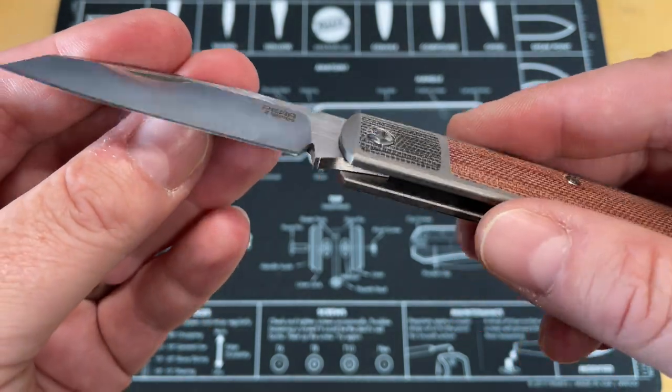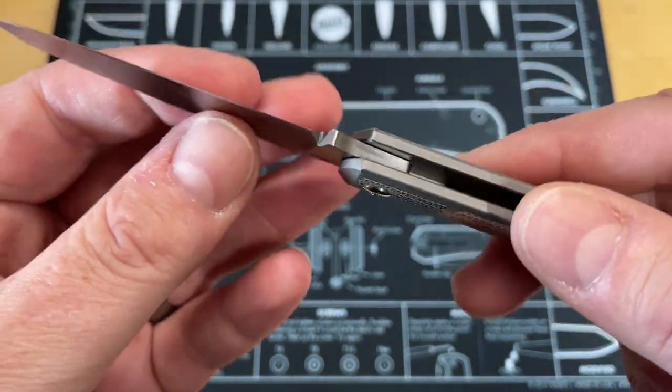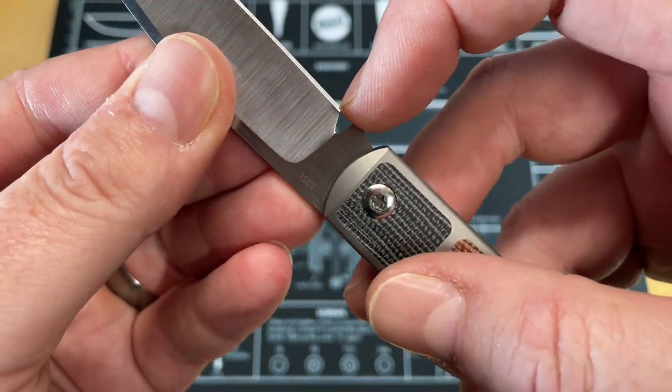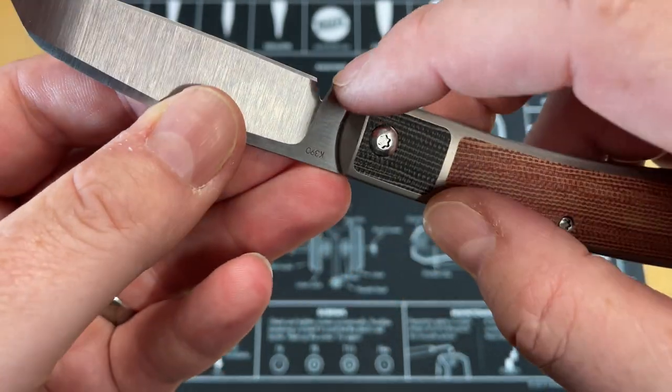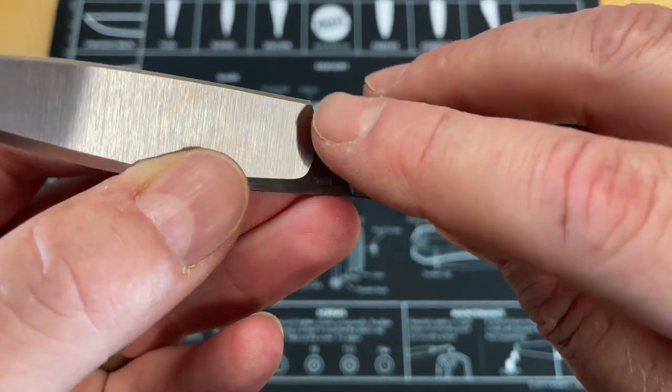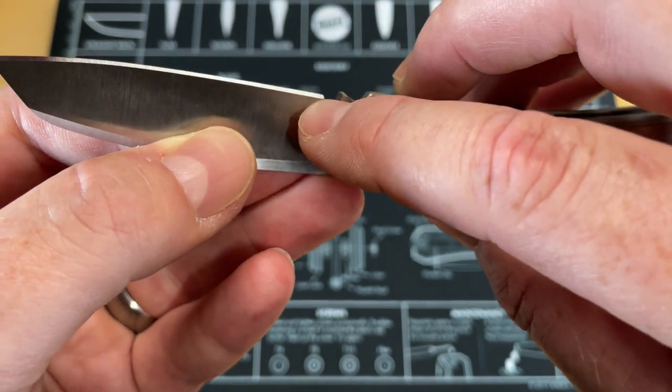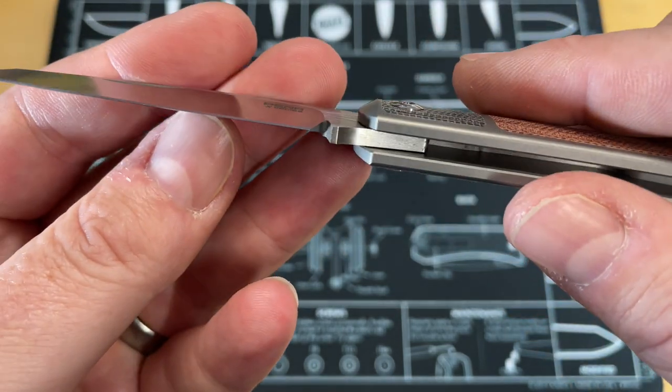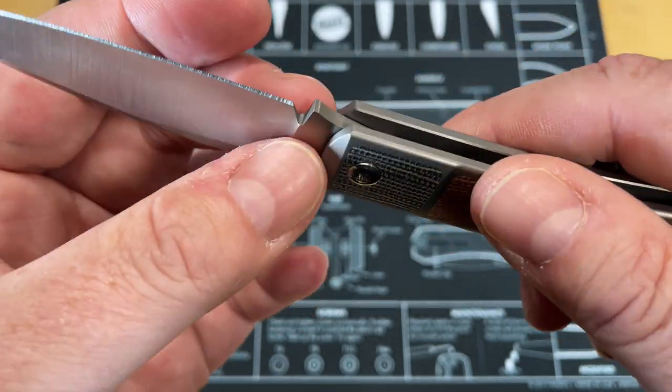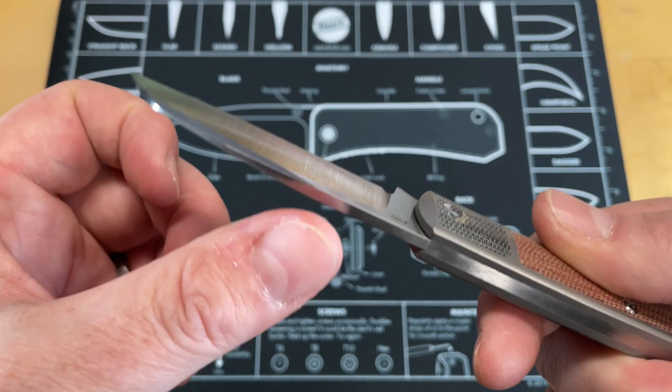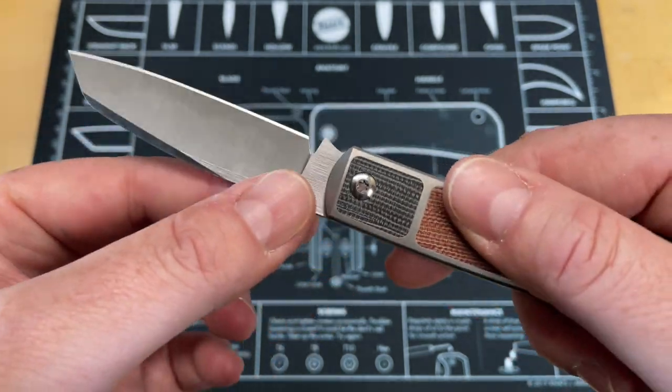Got that swedge, kind of a Wharncliffe sheepsfoot style, nice rounded spine, a little bit of belly on it, nice tip on that. That is a very clean design. I don't know if I'm going to wind up using this enough to sharpen it, but I imagine I would want that to be a little wider because I don't like getting close to the switch. I don't like messing with the aesthetics of the knife and I don't like hitting my stones on that plunge, on that ricasso.